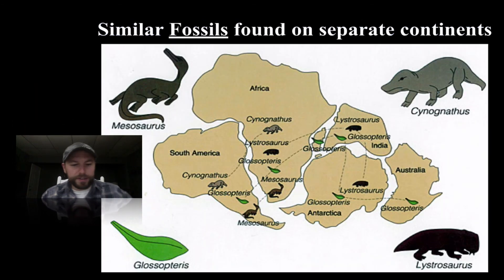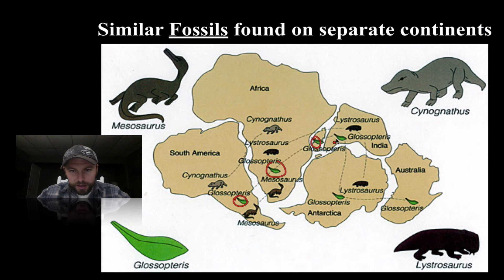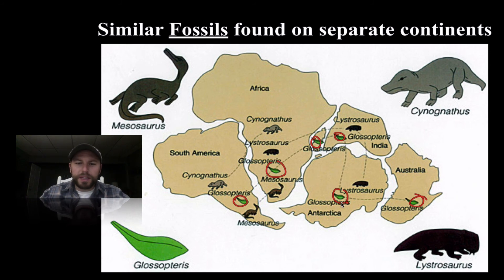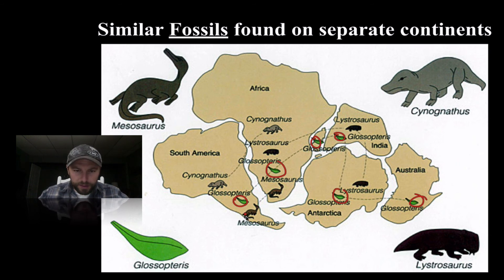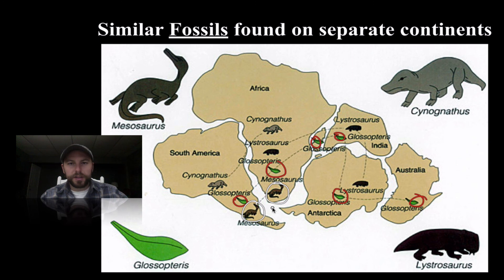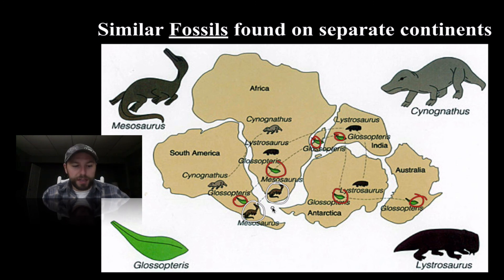We also have similar fossils. In this picture you can see Glossopteris — we find it here and here, and as we go all the way over to Australia and Antarctica, you can see the same fossil. The only way this fossil can be on all continents is if it was able to move from one to another in a relatively short period of time. Notice we also have Mesosaurus — here it is, moving between these two continents. Finding the same fossils on separate continents means at some point they had to be joined together.